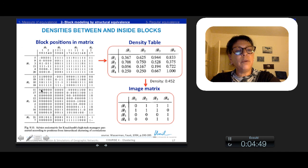For example, the block 1 to the block 2, we have 15 ties out of 24 possible choices. So the density is 0.625.